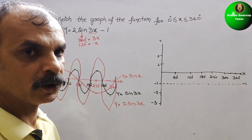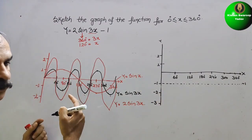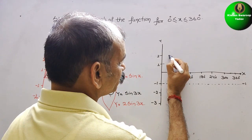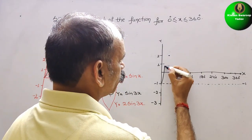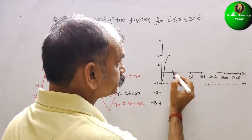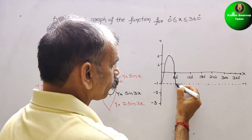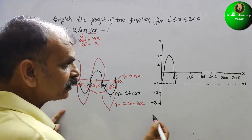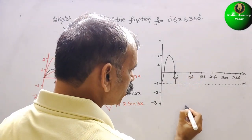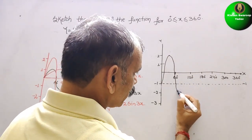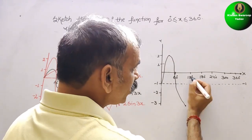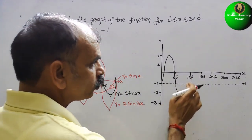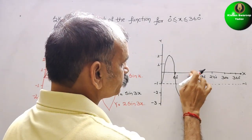Drawing the final graph: from 0° to 30°, it starts at the -1 level and rises. At 60°, it reaches 0 on the shifted scale. At 90°, it goes down to -3. At 120°, it returns to -1 (the zero-level). The wave crosses back through the shifted baseline.